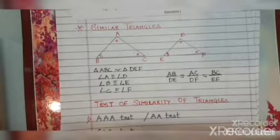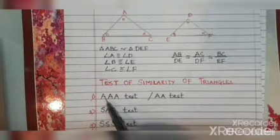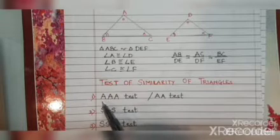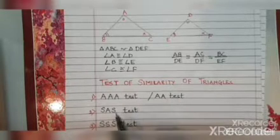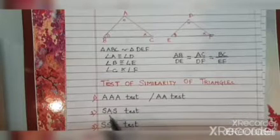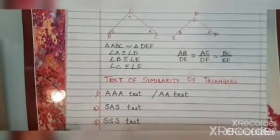After this we study the test of similarity of triangles. In earlier standards you must have studied tests of congruency: SSS test, SAS test, ASA test. In similarity also, we have three tests — the AAA test (also called the AA test, where A stands for angle and S stands for side), then the SAS test (side, angle, side), and the third is the SSS test (side, side, side).